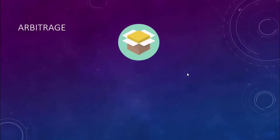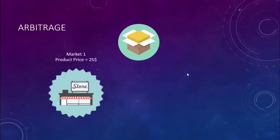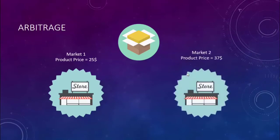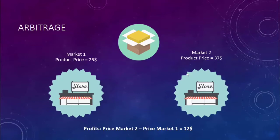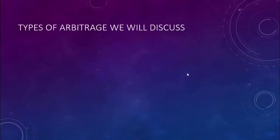That definition can be confusing, but it's actually very simple. Let me explain: we have a product — say an iPhone — sold in market one at $25 and in market two at $37. Arbitrage is buying from market one and selling in market two, profiting from the price difference. Market two price minus market one price equals $12 profit. The classic formula: buy for less, sell for more.